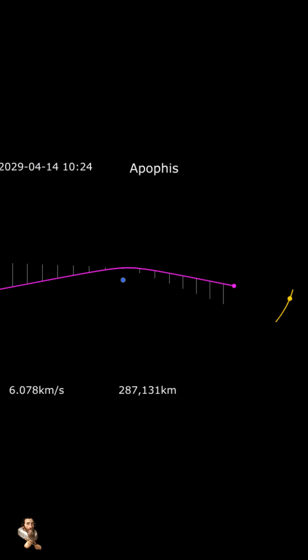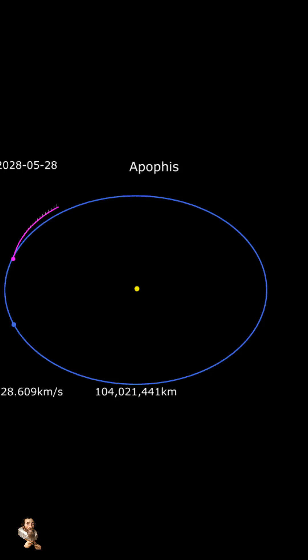Such a scenario should be distinguishable by a residual optical brightening of Apophis caused by the dust generated from the hypervelocity impact that deflected it.